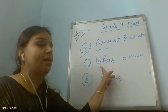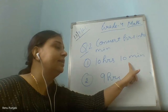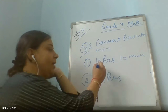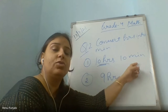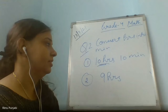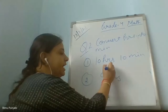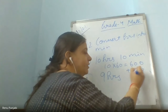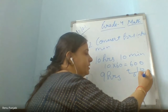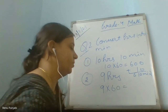Convert hours into minutes: first 10 multiplied by 60 is 600, then add the 10 minutes because that is already in minutes — no need to convert it. So the answer is 610 minutes. For 9 hours: 9 multiplied by 60 — write the answer and tell me how many minutes it comes to.